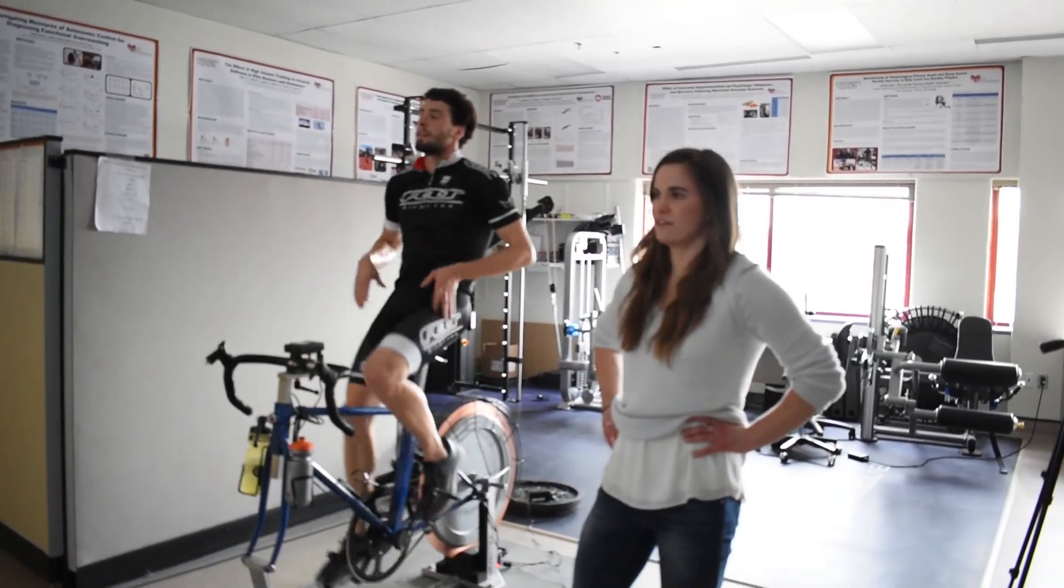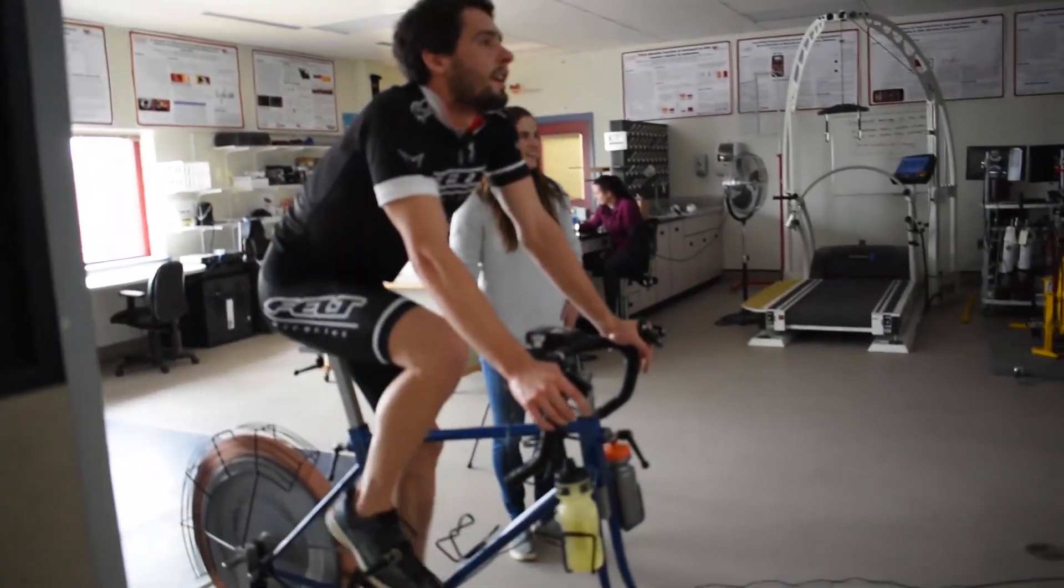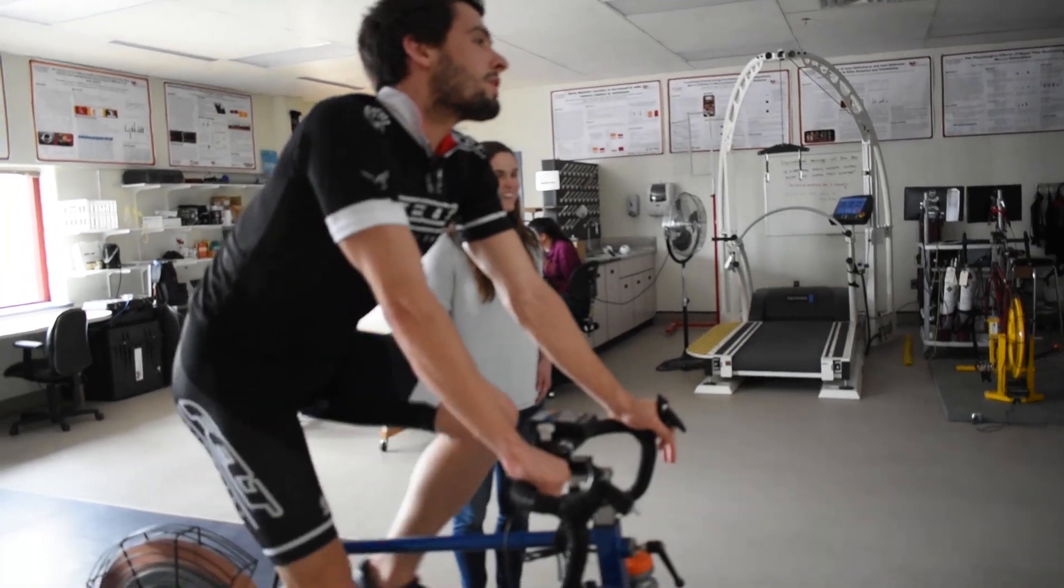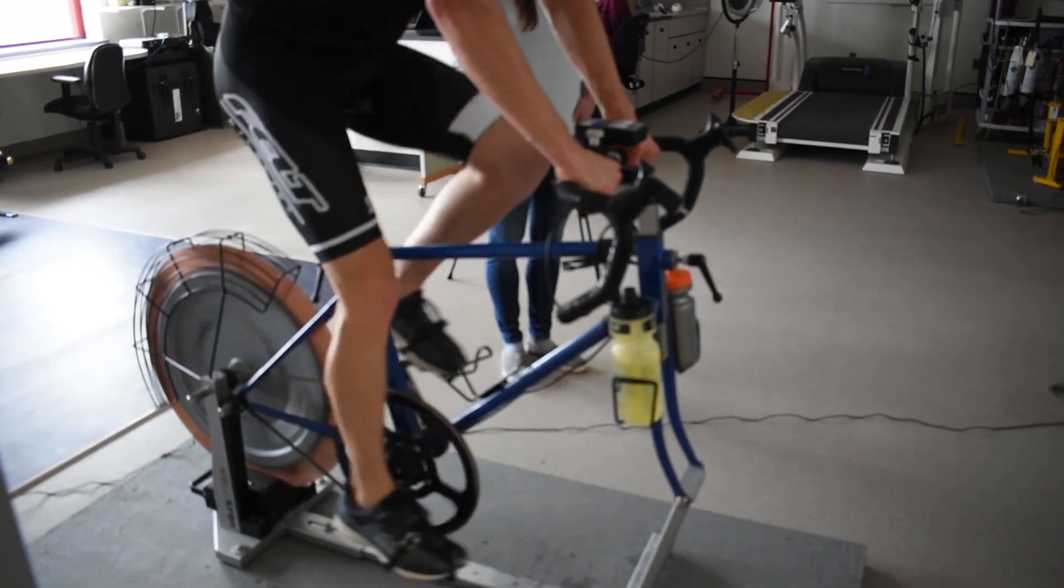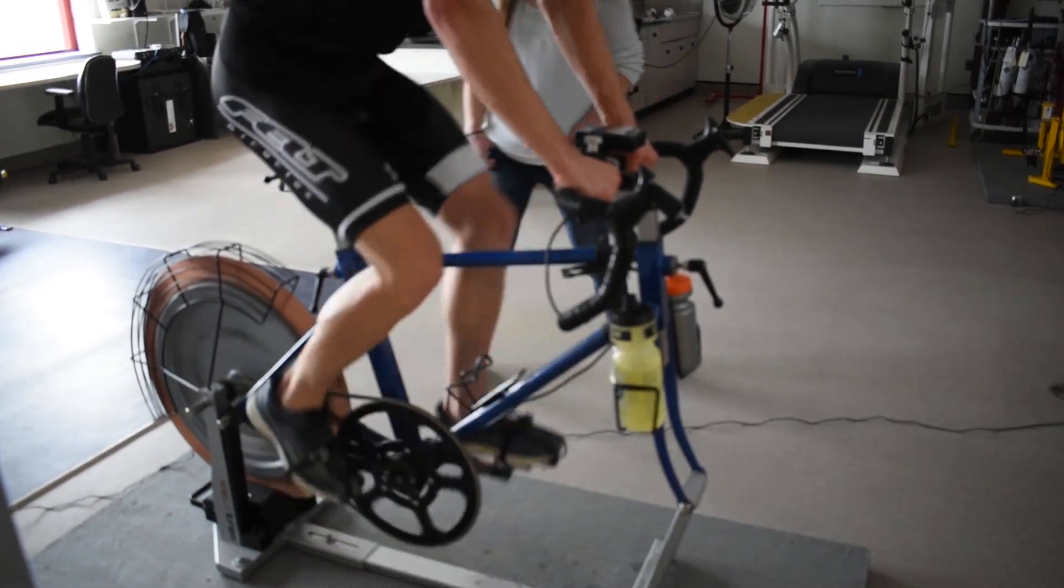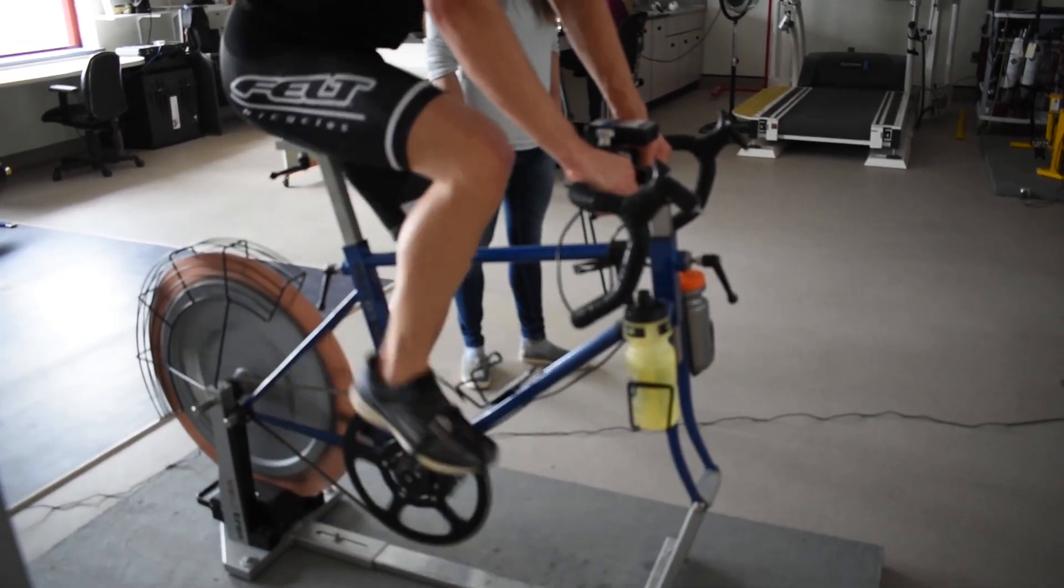The reason why we wanted to use this measure was because previous work with overtraining has used indirect measures and we haven't been able to figure out if sympathetic activity is going up or parasympathetic activity is going up. There's just very conflicting results. We started out with 23 athletes and they underwent a recovery period to make sure they were all at baseline, and then they did three weeks of either very hard overload training or three weeks of their regular training.